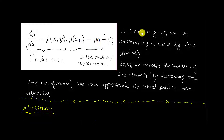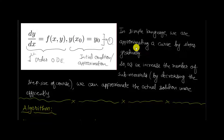In simple language, we are approximating a curve by slopes gradually. The figure might be complicated if I take into account all the slopes, so I focused only on one slope. But if you have understood this one slope, then instead of going from y0 to y1, if I am going to have a jump from y1 to y2, there will be another tangent at y1 that gives me the next approximation, that is y2. If that next approximation is same as the actual one, I stop there; otherwise there will be some difference, and I will have a new formula.